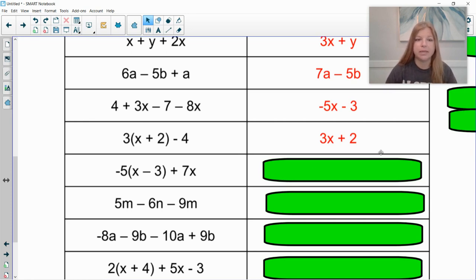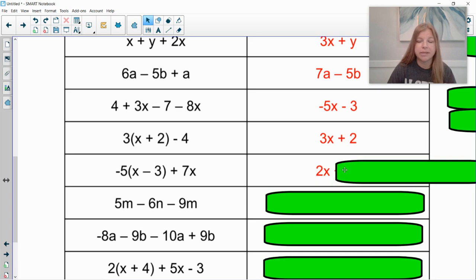For the next one, negative 5 times x would give me negative 5x. Negative 5 times negative 3, a negative times a negative is a positive. That would give us positive 15. Well, a negative 5x plus 7x would leave us with positive 2x. And so my final answer is 2x plus 15.